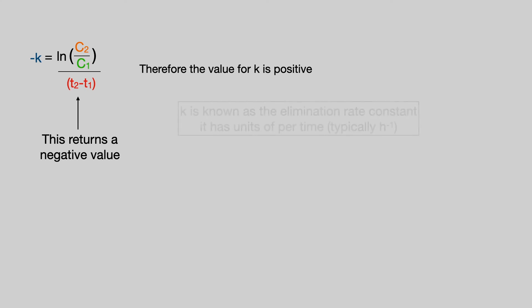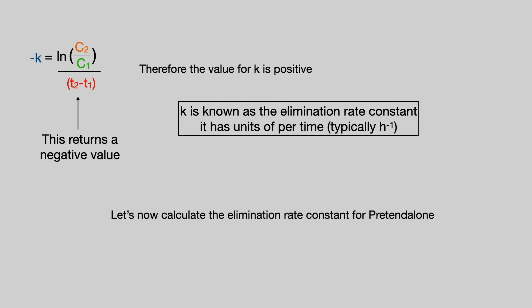K is known as the elimination rate constant and it has units of per time typically per hour. So let's now calculate the elimination rate constant for pretendalone.